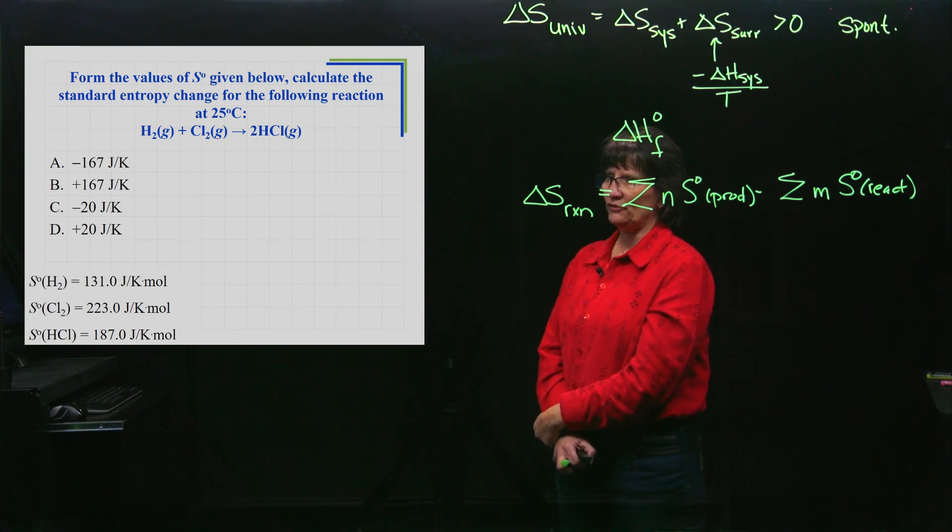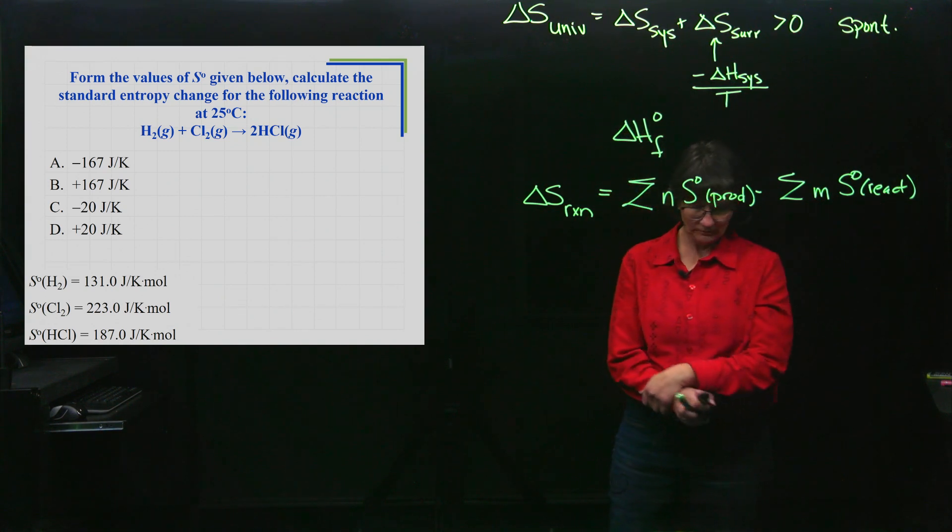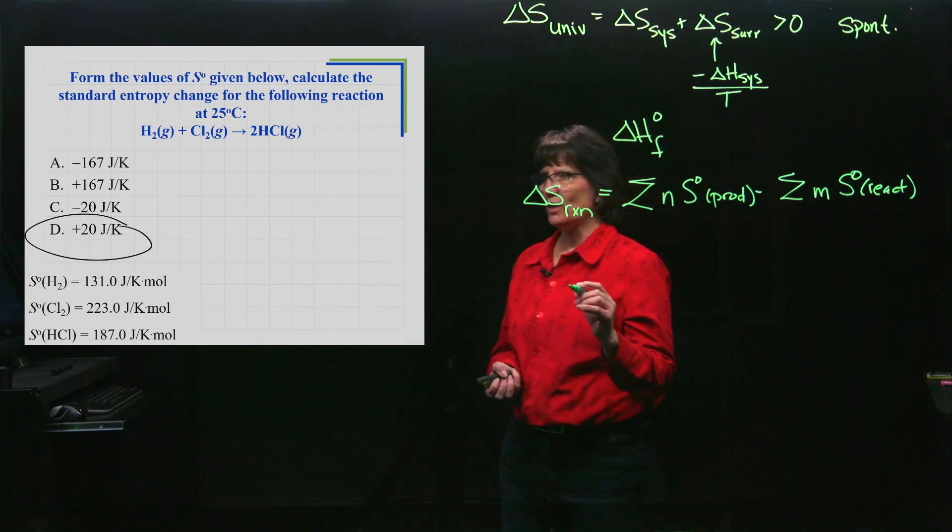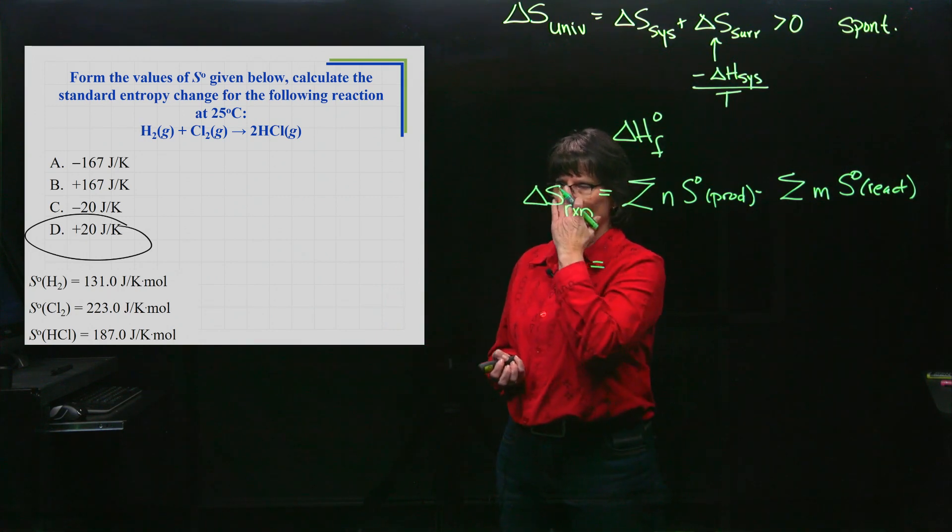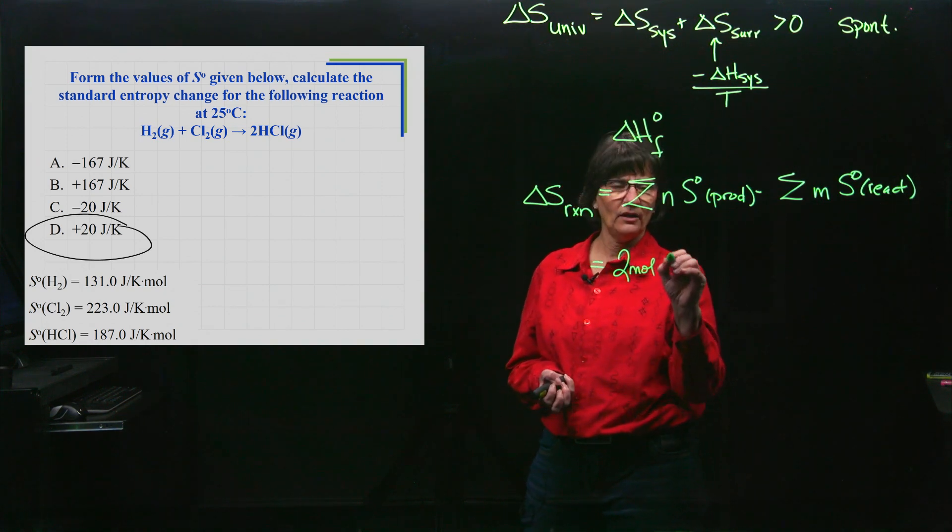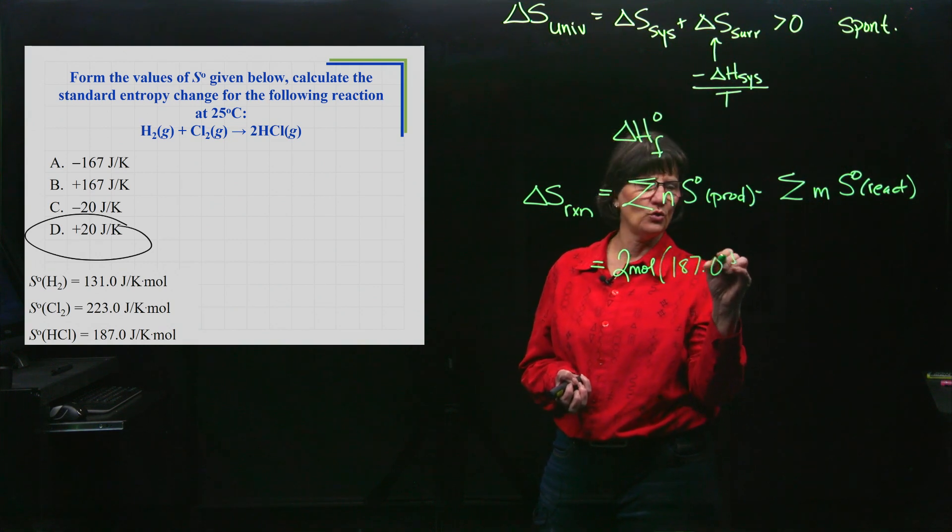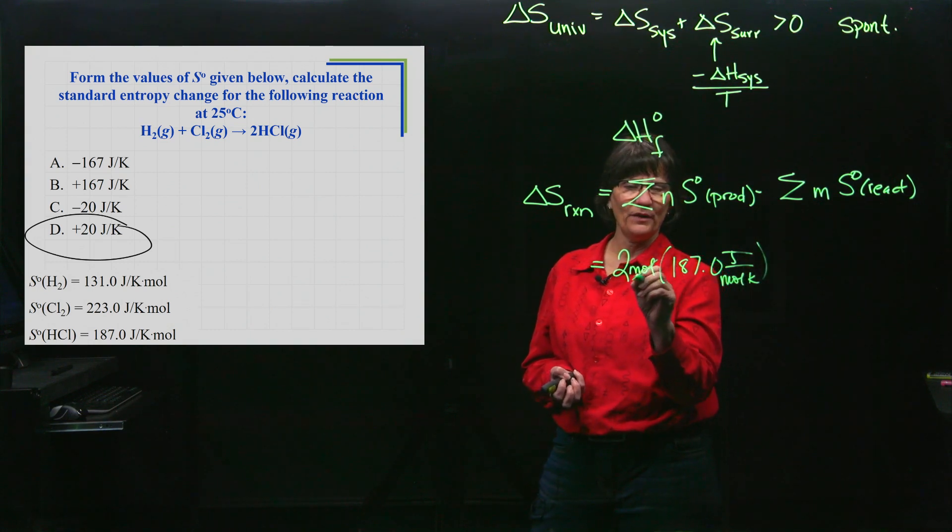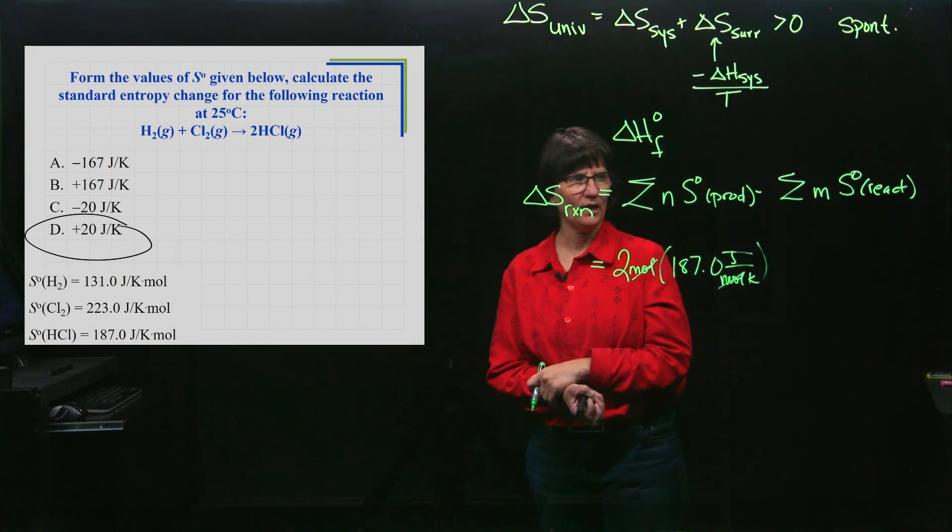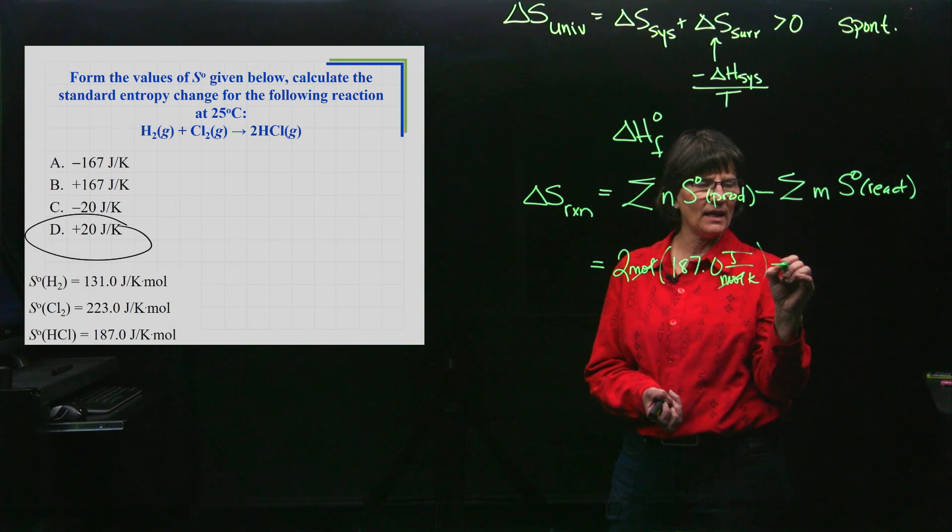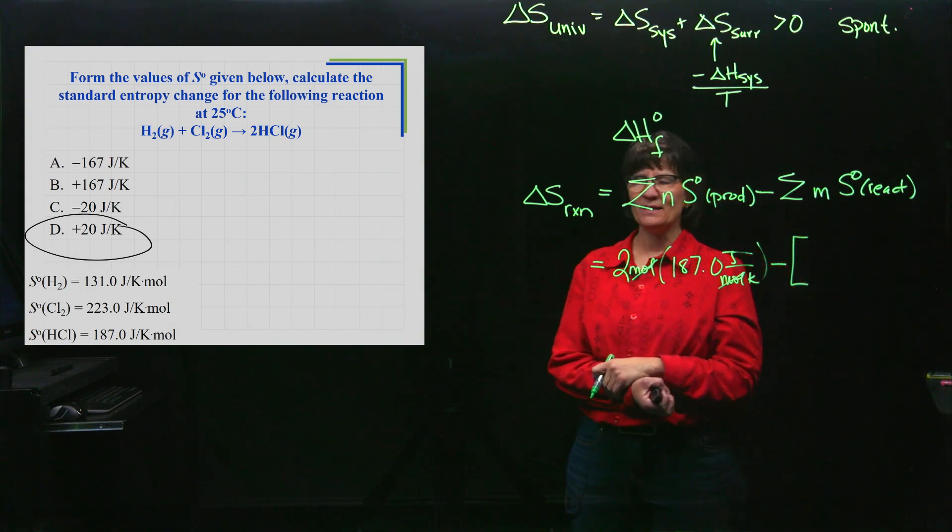Simple equation: the ΔS of a reaction, which is your system, equals the sum using the coefficients of the S's (standard) of products minus adding up using the coefficients the S of reactants. A typical problem - let's give you the S's. I've given you the values; I'm just going to make sure you can use this equation appropriately. Well, I sure hope you got positive 20 joules per Kelvin.